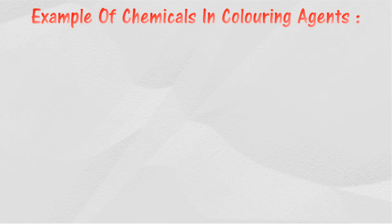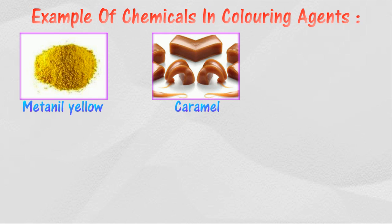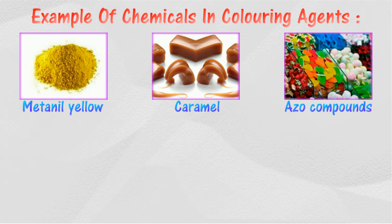Here are a few examples of chemicals used in coloring agents: metanil yellow, or textile dyes, which are used as food coloring agents. Caramel is often used in sugar paste, royal icing, buttercream, cake mixes, pastry, cocktails, and others.